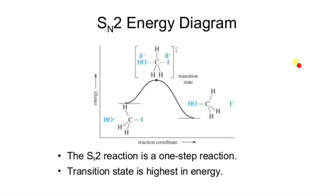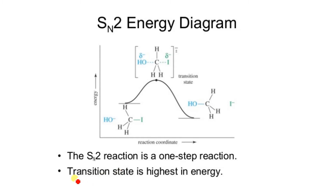The SN2 energy diagram gives just one curve because it is a one-step reaction. The transition state is formed and has the highest energy. SN2 is a one-step reaction.